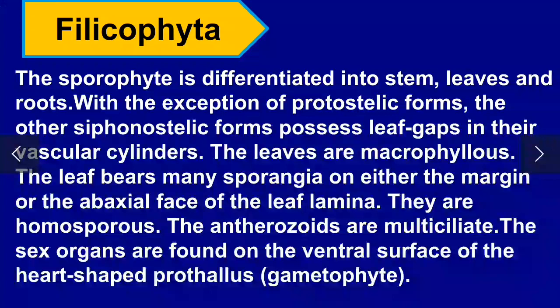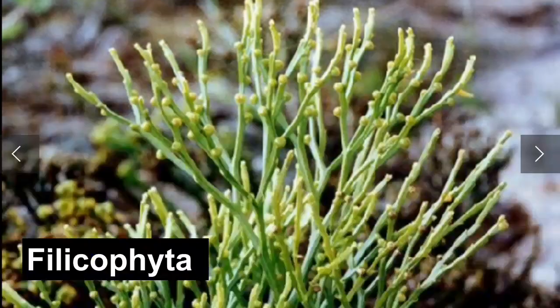Filicophyta (Pteropsida): the sporophyte is differentiated into stem, leaves, and root. A siphonostelic form is present. Leaf gaps are present in the vascular cylinder. The leaves are macrophyllous. They are homosporous. The antherozoids are multiciliate. The sex organs are found on the ventral surface of the heart-shaped prothallus gametophyte.